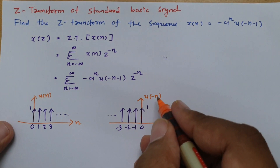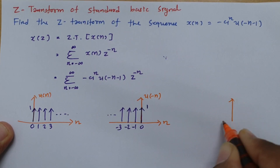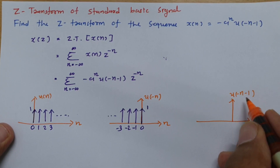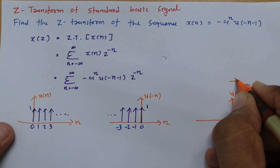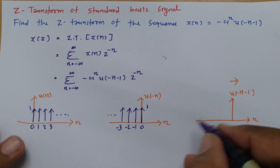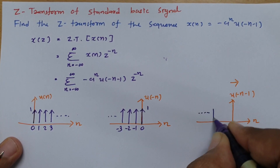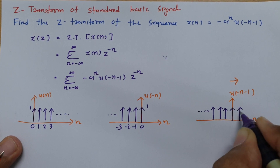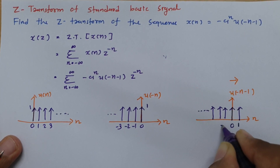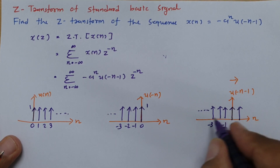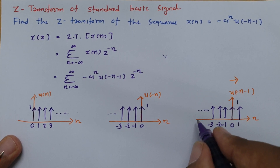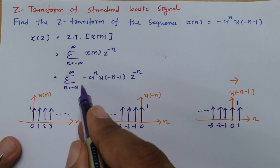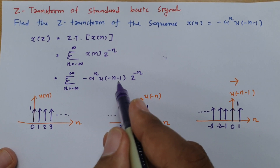Now, u(-n-1) is u(-n) shifted by one position in the negative direction. So the signal starts from -∞ and shifts one sample, meaning the impulse train has magnitude 1 from -∞ up to n = -1. Therefore, the limit of u(-n-1) is from -∞ to -1, or equivalently the summation limit becomes -∞ to 1 after accounting for the signal extent, allowing us to nullify u(-n-1) in the Z-transform.